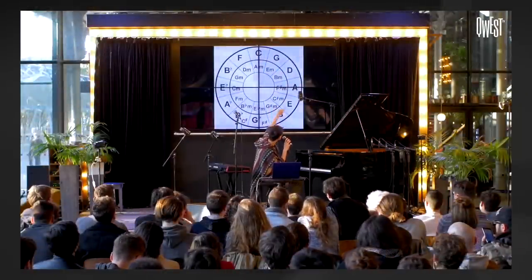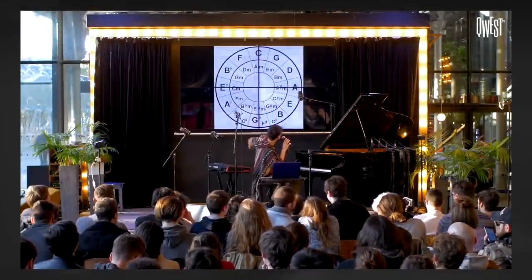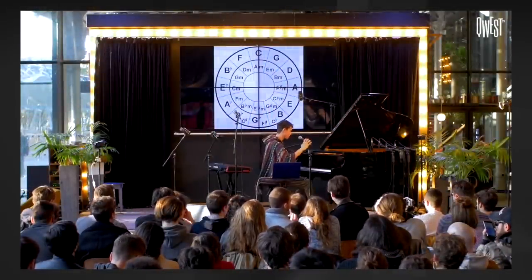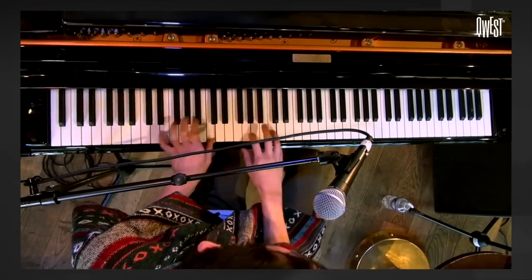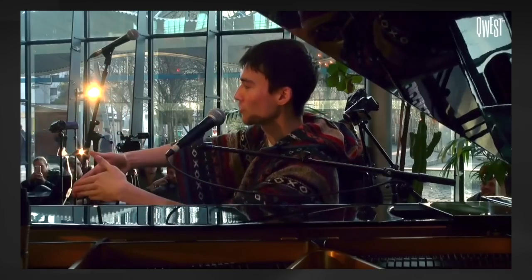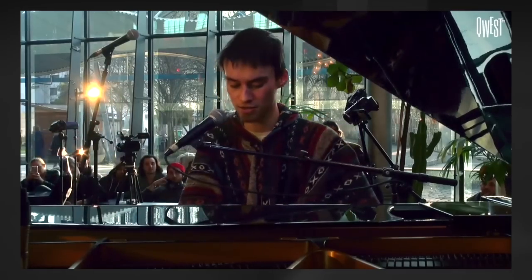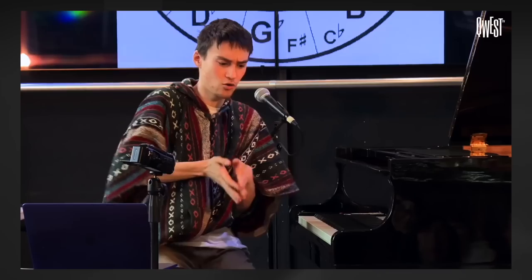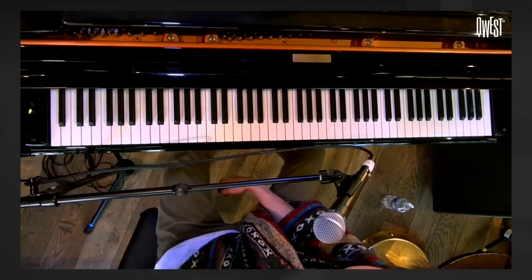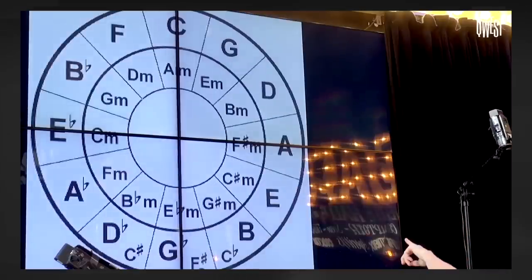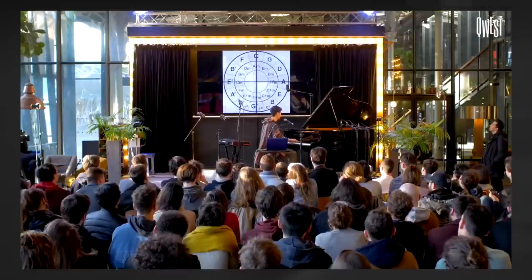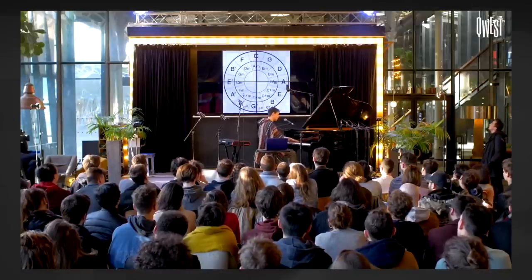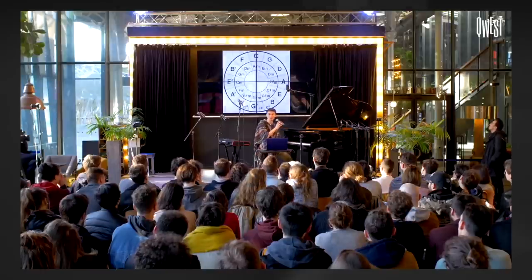Jacob explains: if you move anti-clockwise, you're getting darker — you're going D, G, C, and we're resolving right, as opposed to plagally. It's like we're dark and we're going to open. And you can actually start being a plagal cadence from E, which is really weird, because instead of going E, A, D, G, C — you can go just E. And there's something so elegant about that.